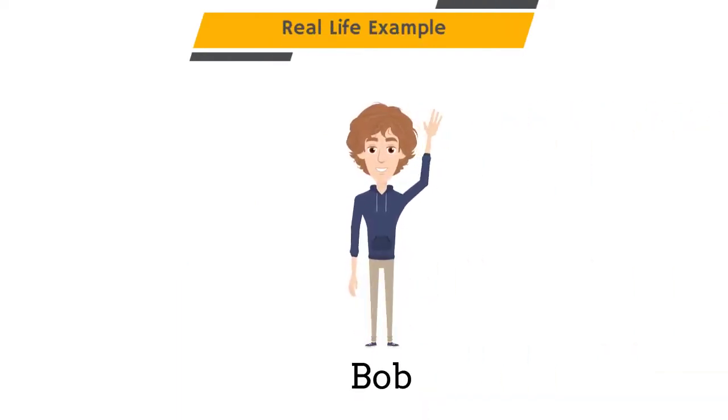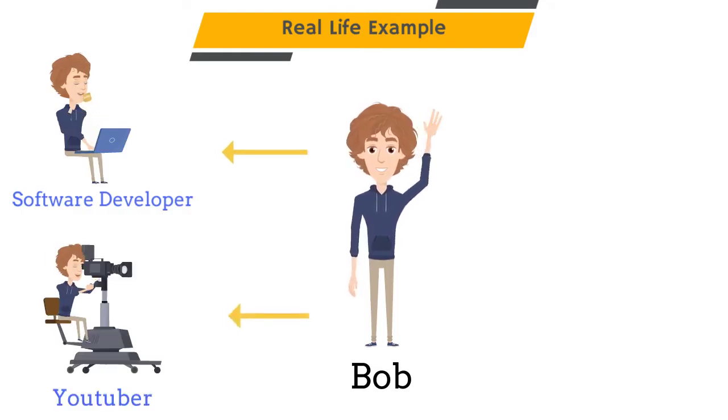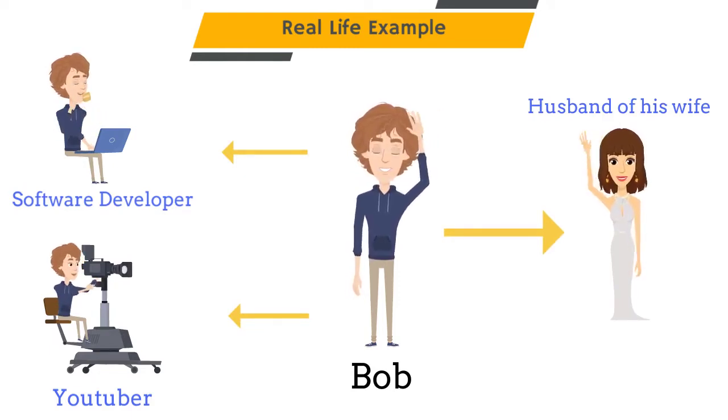Consider a real life example of a person called Bob. Bob is a software developer. Bob also creates videos, meaning Bob is a YouTuber. Bob is also a husband of a beautiful wife. So Bob is just one person who has to play three different roles. That is, he has three different forms. So we can say that Bob's work is a type of polymorphism.